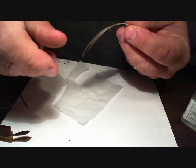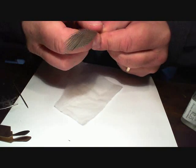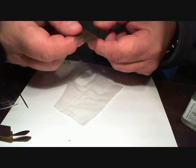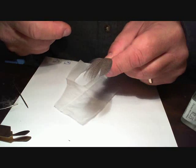Then you take a feather of choice, this is Gadwall. You can use Gadwall flank, pheasant rump, any type of feather. This one has some nice barring on it, so that's why I chose this.